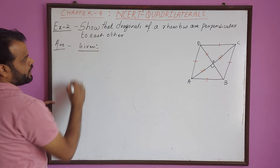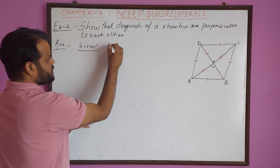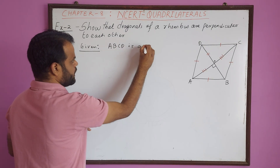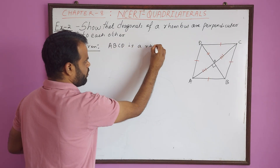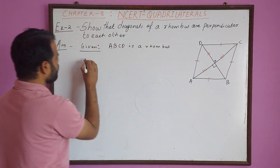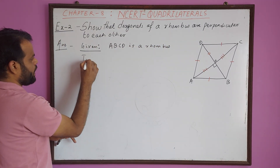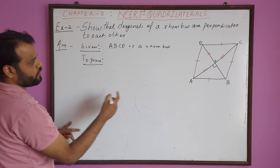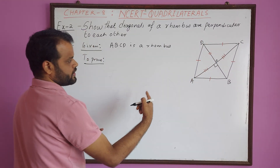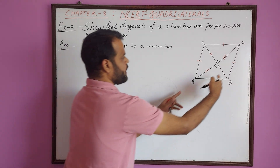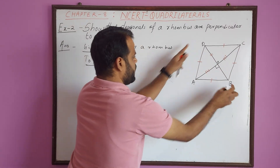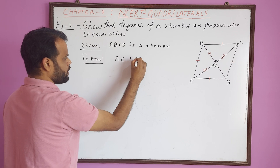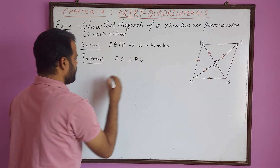Now the step-by-step solution. Given: ABCD is a rhombus. To prove: the diagonals are perpendicular to each other. We have two diagonals AC and BD, so AC is perpendicular to BD.